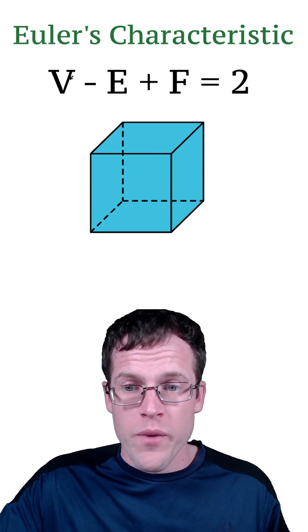What this formula means is when we have a shape like this, a polyhedron, and in this case we have a cube, if we count the number of vertices, which is the number of points, there are 8 points of a cube.